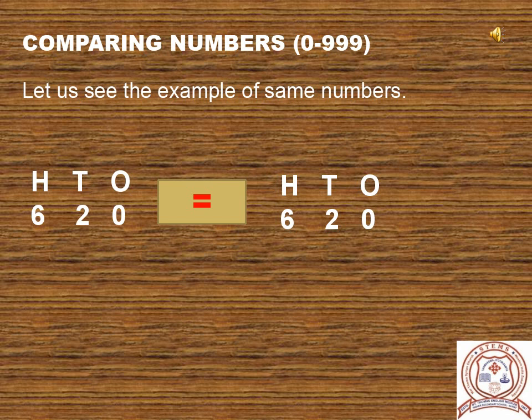Now let us see an example of equal numbers. You can see two numbers: 620 and 620. Which is greater? Each digit in the respective place value is equal. So both are equal. That means 620 is equal to 620.